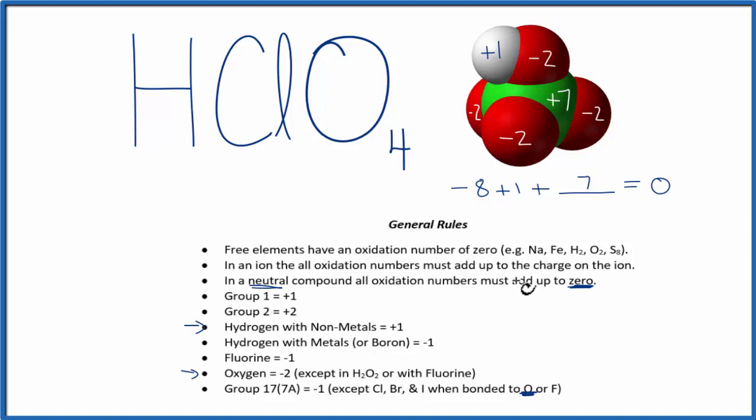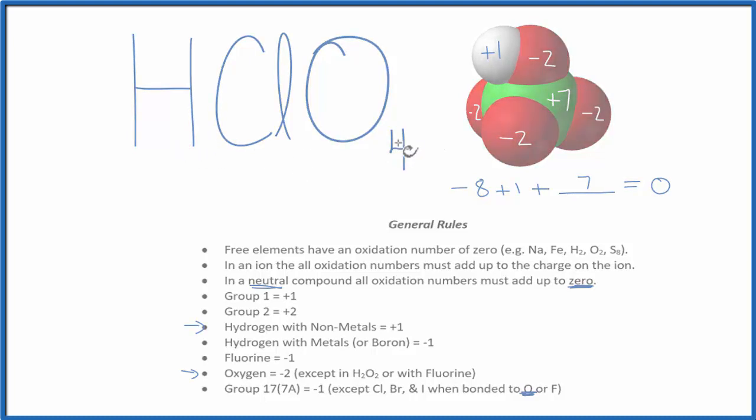So to recap, we figured out the oxidation numbers for the atoms we knew, the chlorines and the hydrogen. And then we use that to figure out the one we didn't know, the chlorine here. This is Dr. B with the oxidation numbers for HClO4, and thanks for watching.